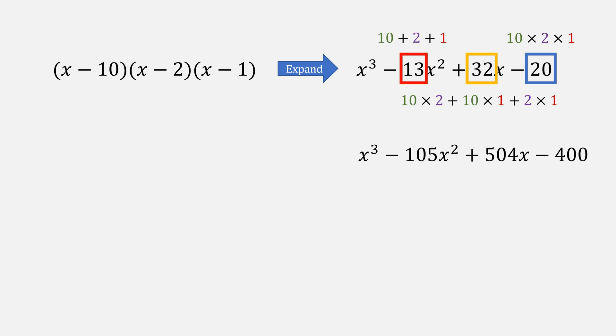You could also work backwards. For example, given this polynomial of x³ - 105x² + 504x - 400, you could try to reverse engineer what the roots that went into it are: a, b, and c.